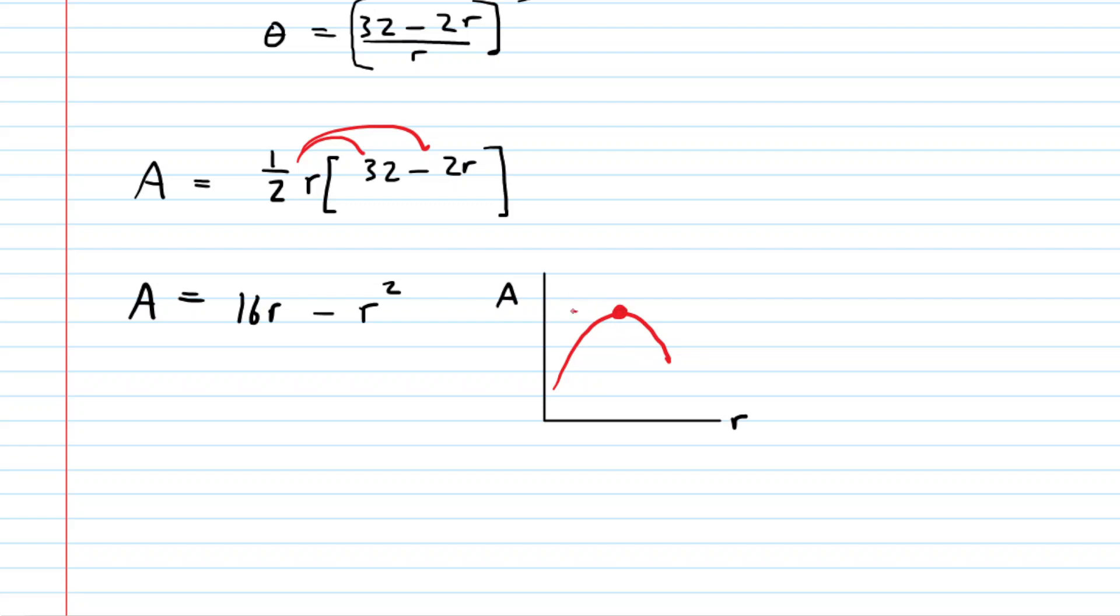Now notice, at the maximum, if we draw a tangent line there, that the slope of that tangent line is equal to 0. So what we're going to do is we're going to compute the derivative, which is equivalent to the slope of the tangent line, and we're going to set it equal to 0.